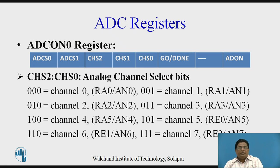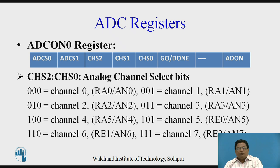Three channel select bits, CHS2 to CHS0, are provided because the ADC has 8 analog inputs. When these three bits are 0,0,0, channel 0 (AN0), multiplexed with pin RA0, is selected — whatever analog input is applied on RA0 gets converted to digital. To select channel 1 (AN1), set CHS0 to 1 and the other two bits to 0, and so on. When all three bits are set, channel 7, multiplexed with pin RE2, is selected.